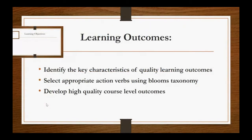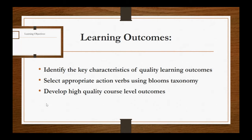My focus today is course level outcomes. And it's always important when we're talking about learning outcomes to talk about the ones that hopefully you walk away with today: identify the key characteristics of quality learning outcomes, select appropriate action verbs using Bloom's taxonomy — we're going to go over that in detail — and then develop high quality course level outcomes, looking at connecting with curriculum and developing concrete course level outcomes.